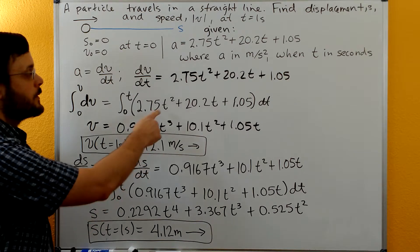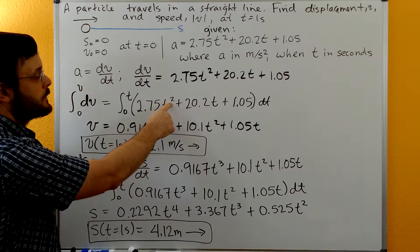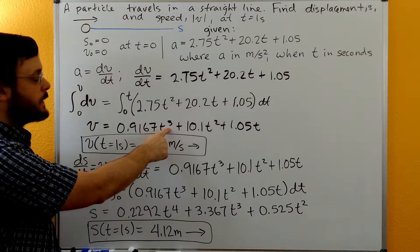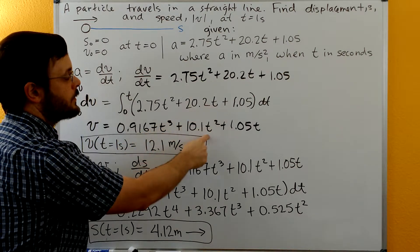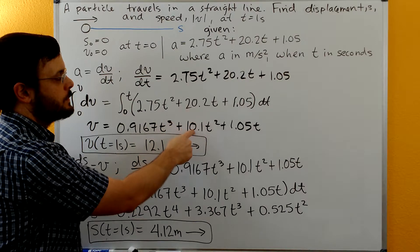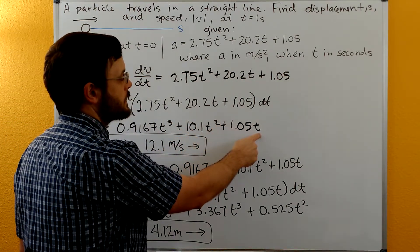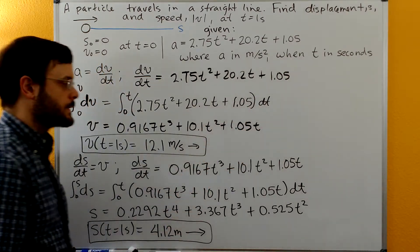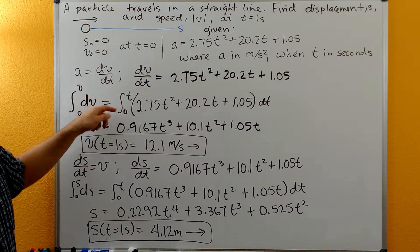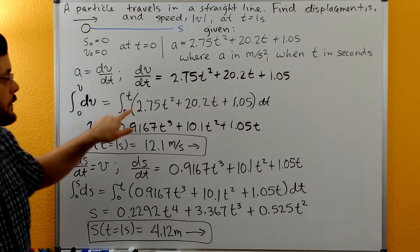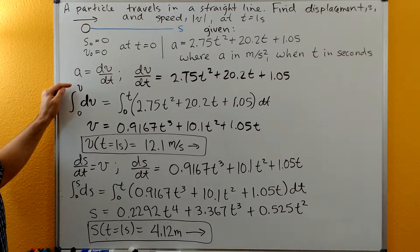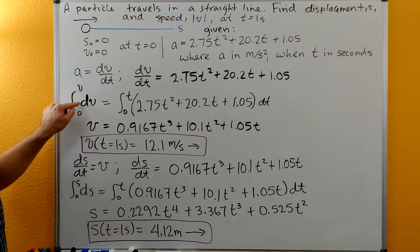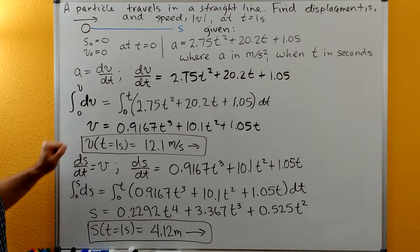We integrate this polynomial. t² becomes t³/3, so we have 2.75 divided by 3. Then t integrates to t²/2, so we have 20.2 divided by 2. And the constant 1.05 integrates to just t. Evaluating with the limits — when we plug in t we get this expression, and when we plug in zero we get zero everywhere, so nothing to subtract off. On the left side, integrating dv gives v, and plugging in the lower limit of zero also gives zero. Always make sure to plug in both upper and lower limits after integrating.